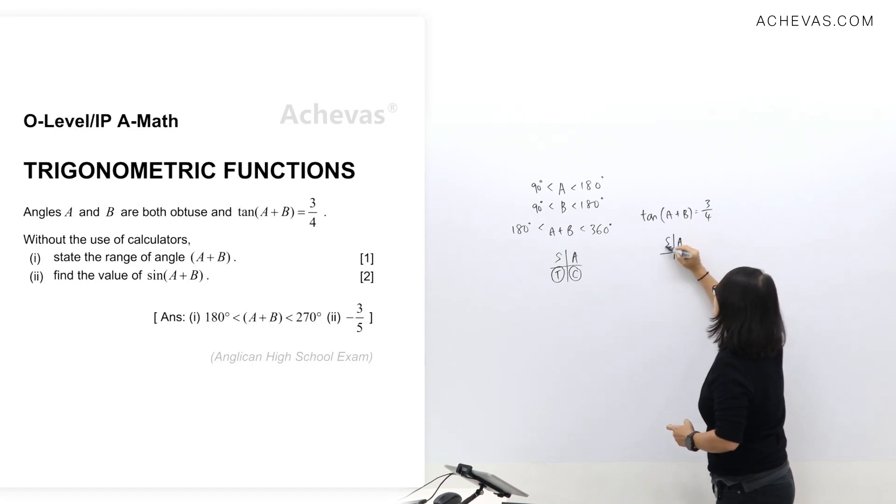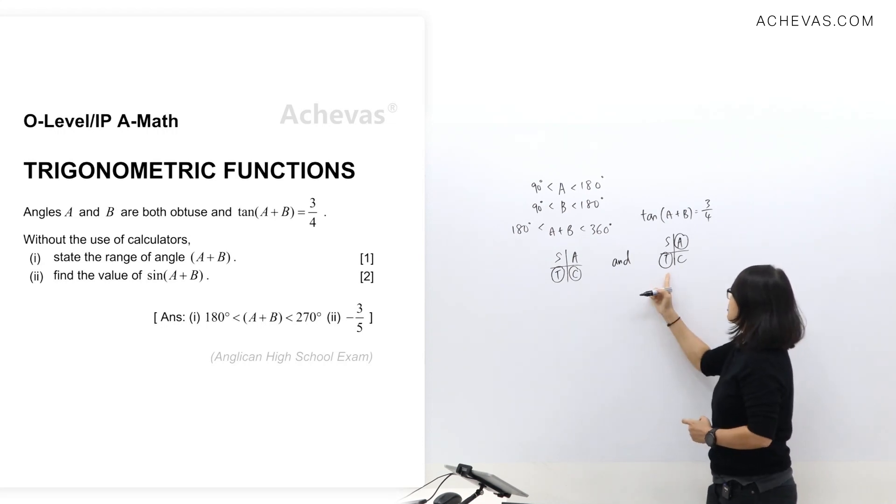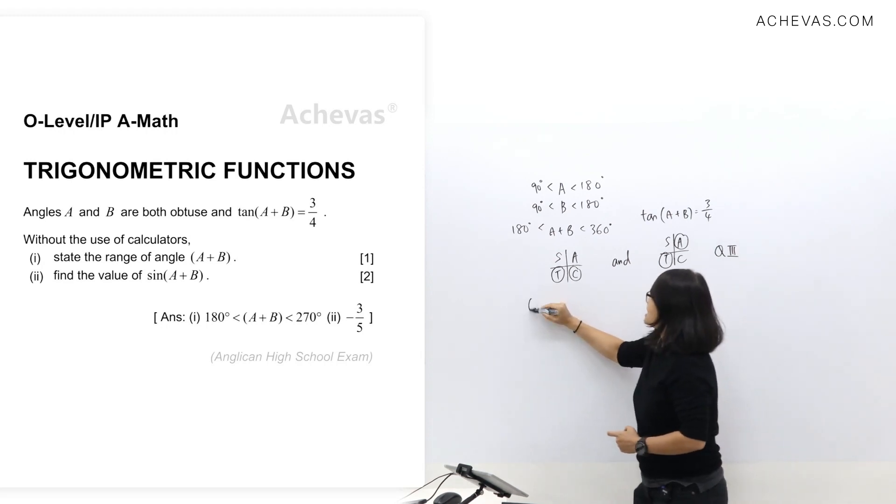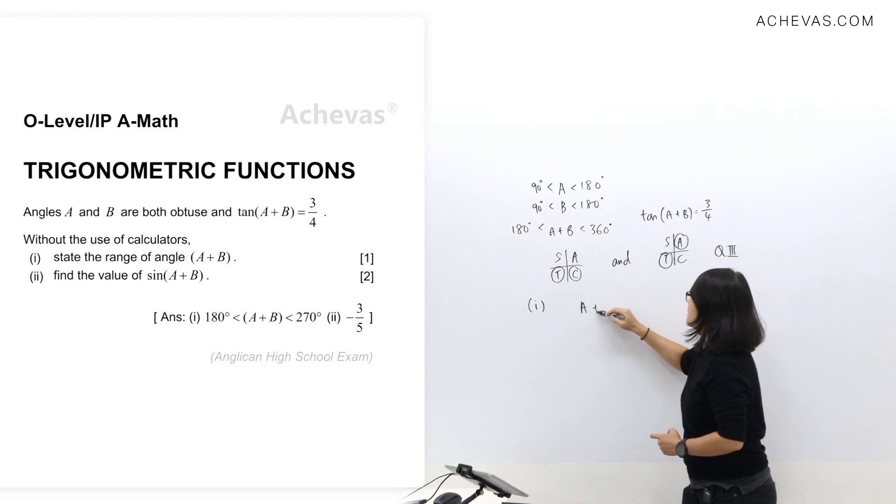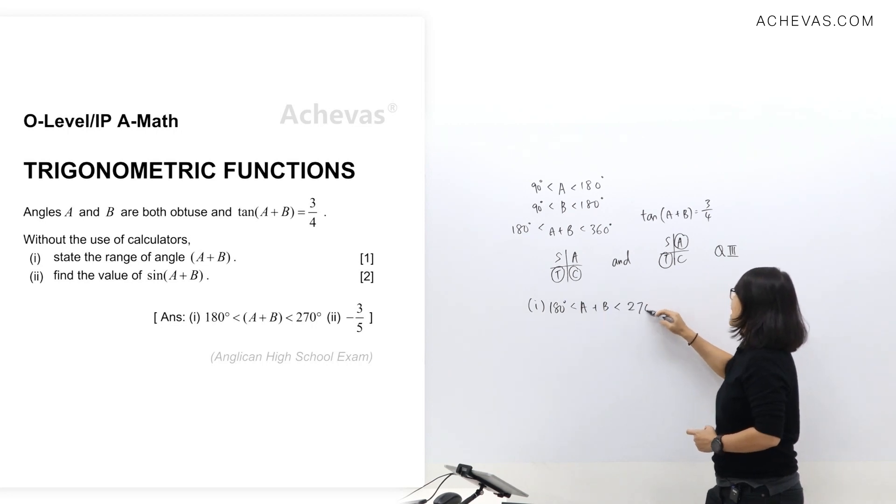And since this information will give me the possible region will be quadrant 1 and quadrant number 3, and I have to pick a common region, so tangent is going to be in quadrant number 3. So my answer for part 1, since quadrant number 3, my value of A plus B must fall between 180 to 270.